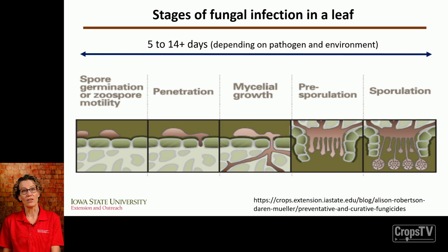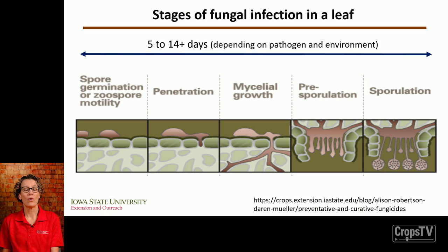Depending on the pathogen and the environment, this disease cycle can take five to more than 14 days. For something like southern rust when there's a lot of leaf moisture and temperatures are in the high 80s, we can get a spore landing, germinating, and producing more spores within five days. For something like gray leaf spot under optimum conditions, that disease cycle can take 14 days.